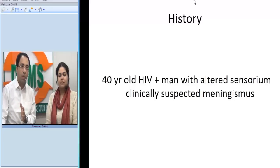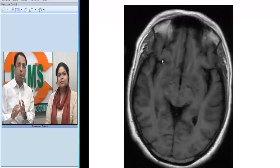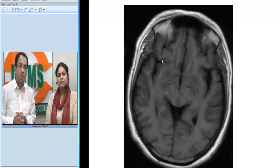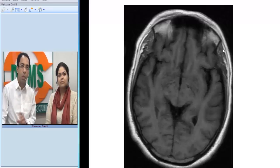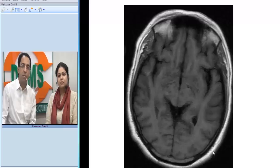When we did the MRI of the patient, I want you to look at this first image. This is a T1-weighted MRI image. How do you know this is T1-weighted? The CSF-filled spaces appear dark, the white matter is white, the grey matter is grey, the bones are dark, and fat is white. This is typical of a T1 MRI image.